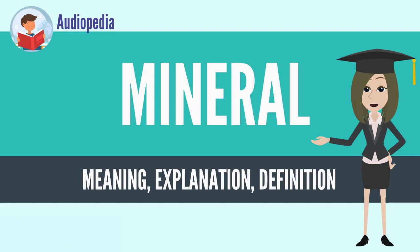These tetrahedra can be polymerized to give the subclasses: orthosilicates (no polymerization, single tetrahedra), sorosilicates (two tetrahedra bonded together), cyclosilicates (rings of tetrahedra), inosilicates (chains of tetrahedra), phyllosilicates (sheets of tetrahedra), and tectosilicates (three-dimensional network of tetrahedra).